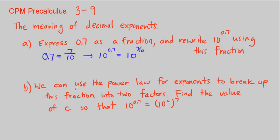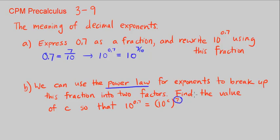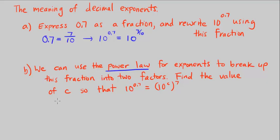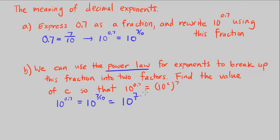Part B says we can use the power law for exponents to break up this fraction into two factors. Find the value of C so that 10 to the 0.7 equals 10 to the C, to the power of 7. So far we have 10 to the power of 7 over 10. We can break up this fraction such that we have 10 to the power of 7 over 1 times 1 over 10, which is the same as 10 to the power of 1 over 10 times 7 over 1.